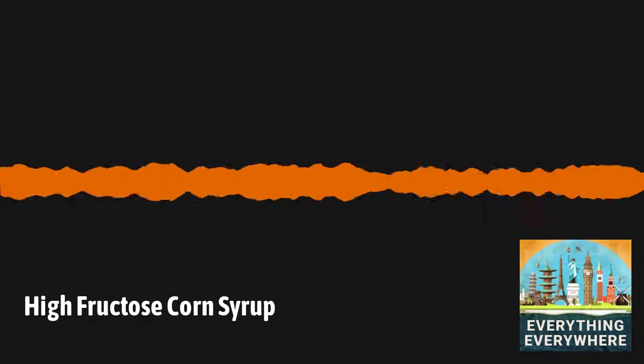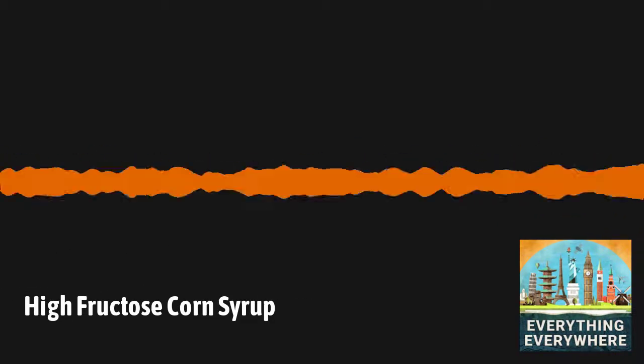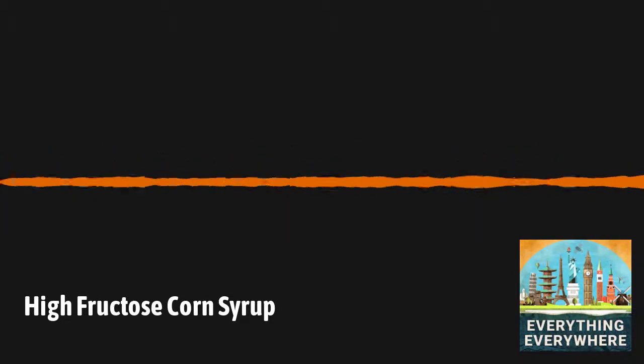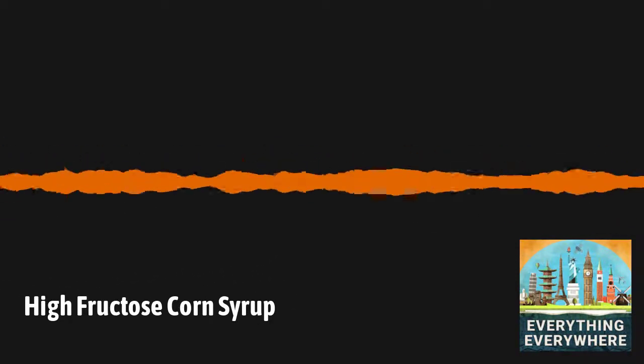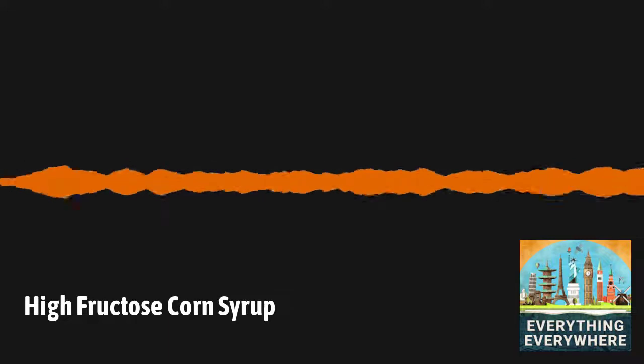Even fruit, which does have sugar, was only available in season, and even then they weren't eating the same type of fruits that we're eating today. Modern fruits were cross-bred over centuries to be higher in sugar content than they would have been in nature.